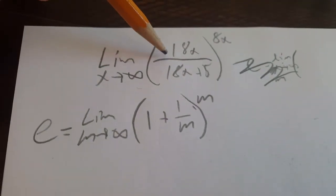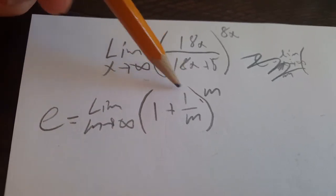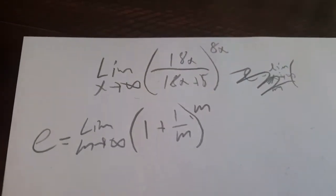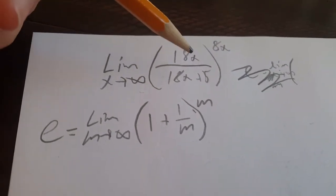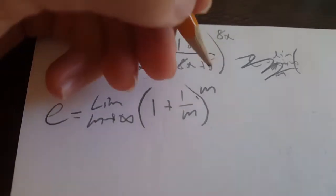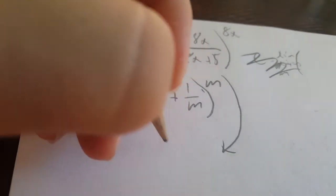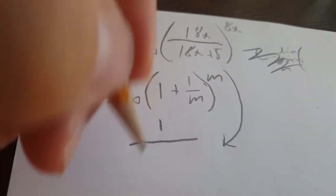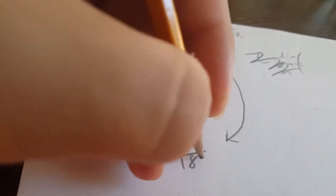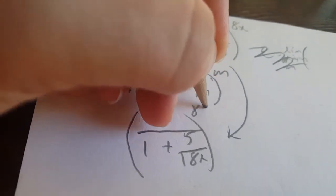So, if I simplify this, it will look very similar to this, but it will have 1 over that. So, we can't use it directly from the limit, but we'll have to find out a few things about it before we can calculate the limit. So, what we can do, we can simplify this to be 1 over 1 plus 5 over 18x. Of course, all of this is being raised to the power of 8x.